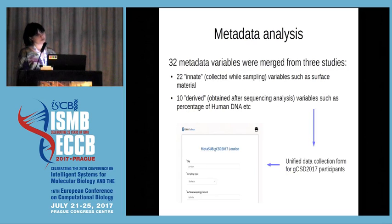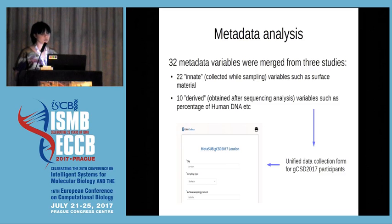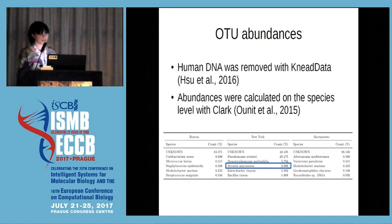Why were so many adapters left? Most probably some fragments may have an insert shorter than the length of the single read, which results in the presence of adapter at the end of the reads, as shown on this plot. So you also need to be really careful about how you prepare your library. We then tried to merge all the metadata from three different studies and divided it into innate data, which was collected while sampling, and derived data, which was obtained after sequence analysis. That actually helped us to create a unified collection form for Global City Sampling Day, which was used by MetaSAP participants and really made downstream analysis much easier. Then we calculated OTU abundances.